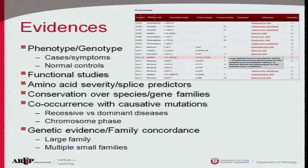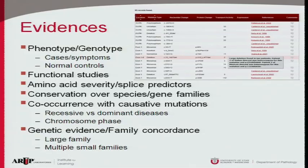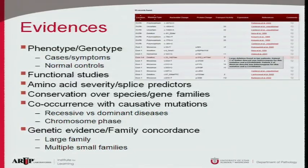There are different types of evidence we look for: phenotype-genotype correlation, cases with symptoms versus normal controls, and functional studies which can cover a wide variety. We look at splice predictors, amino acid severity, and conservation. Importantly, we need to know if a variant co-occurs with other causative mutations, and we need to put it together as a combination for recessive diseases. I do value genetic evidence and family concordance studies, though these are not easy for clinical laboratories to obtain.